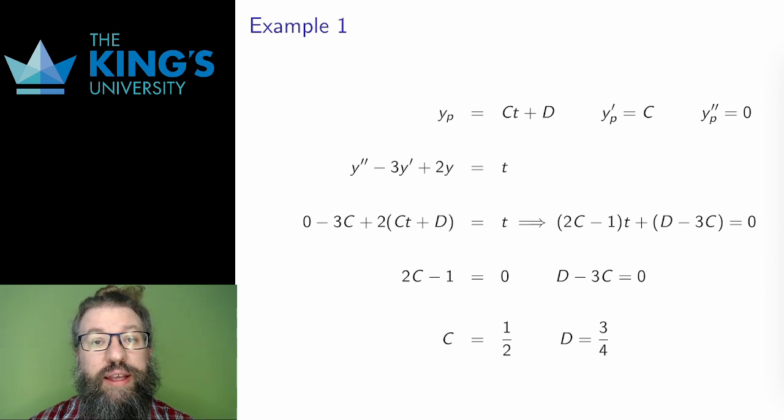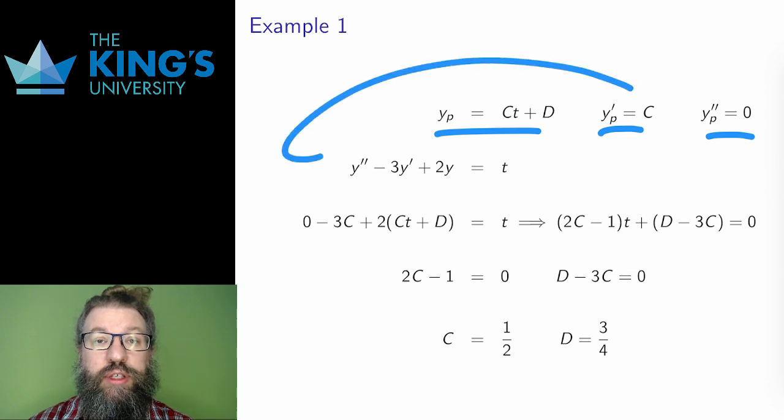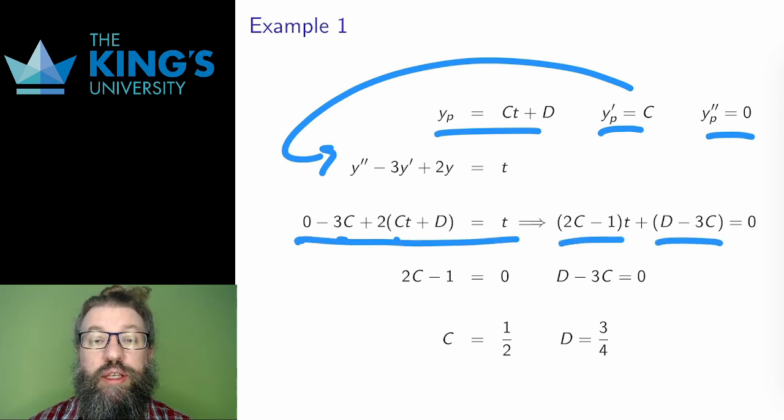Well, I just put it all back in the equation. Here are the derivatives of the particular solution. I replace the three terms in the DE, y, y prime, y double prime, which results in this equation. Then I'll group the equation with coefficients of t, including bringing the t from the left over, and constant coefficients.